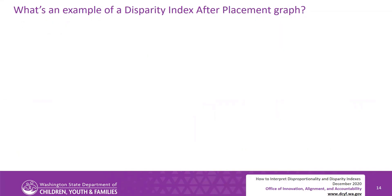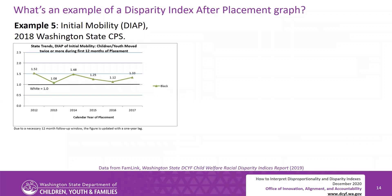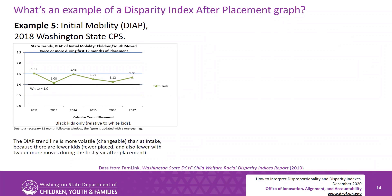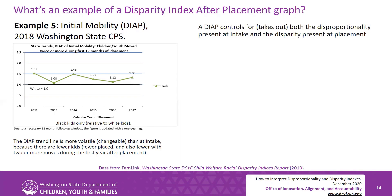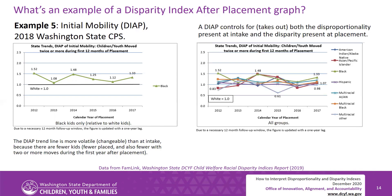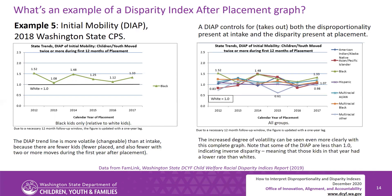Example 5: initial mobility, DI-AI-P, 2018 Washington state CPS — black kids only, relative to white kids. The DI-AI-P trend line is more volatile, that is, changeable, than at intake, because there are fewer kids — fewer placed — and also fewer with two or more moves during the first year after placement. A DI-AI-P controls for, takes out, both the disproportionality present at intake and the disparity present at placement. The increased degree of volatility can be seen even more clearly with the complete graph. Note that some of the DI-AI-P values are less than 1.0, indicating inverse disparity, meaning those kids in that year had a lower rate than whites.